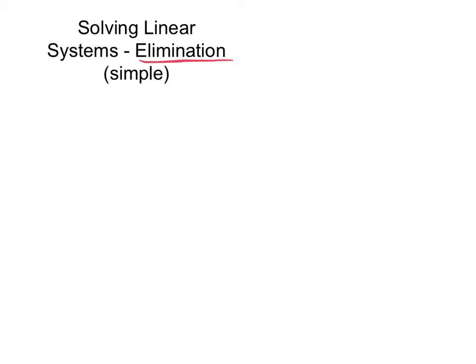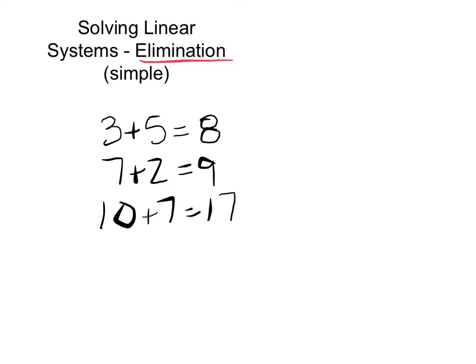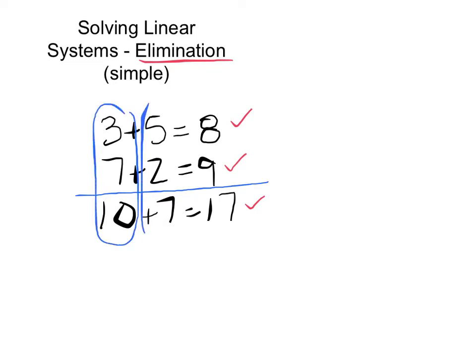I'm going to start out by looking at a few equations with numbers in them. I'm going to ask you to look at the first equation: 3 plus 5 equals 8. Is that a true statement? Yes, it is. 7 plus 2 equals 9 — also true. Now the third equation: 10 plus 7 equals 17. Where did that come from? It came from combining those two other equations. 3 and 7 add together to get 10, 5 and 2 add together to get 7, and 8 and 9 add together to get 17. This is linear combination, and we're going to use it with the method called elimination.